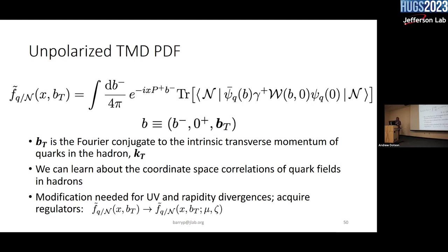Why am I talking about this? And why did I bring up PDFs? When BT goes to zero, you should recover something that looks like a PDF. This is a very important thing. TMDs and PDFs are not separate — they're related quantities. When BT goes to zero, this definition looks the same as a PDF. So when you're looking at small BT, you should think of something that is reminiscent of a PDF. I'll talk about that more explicitly later.